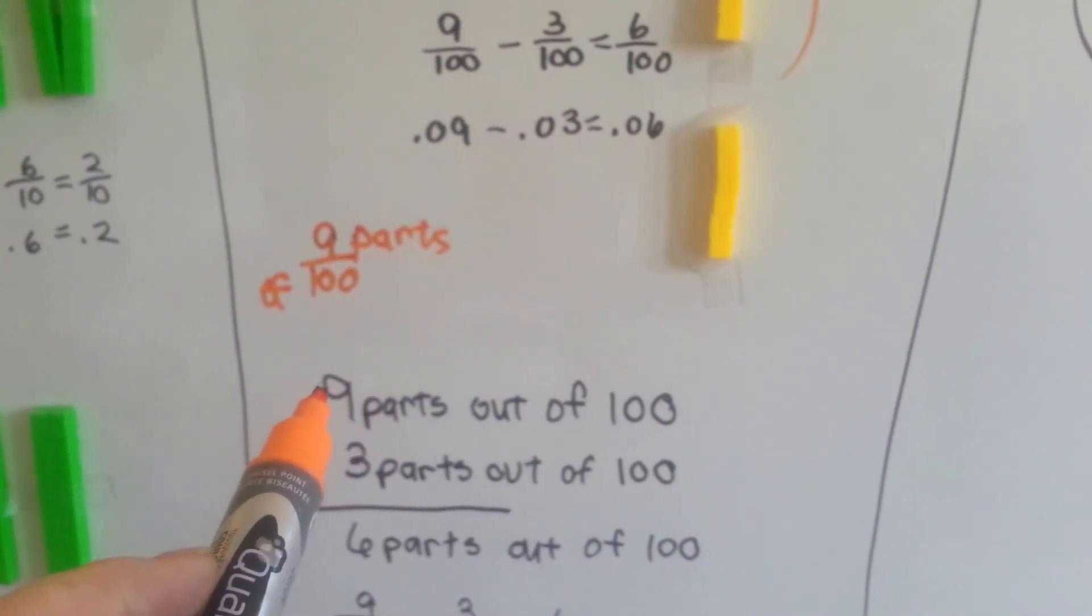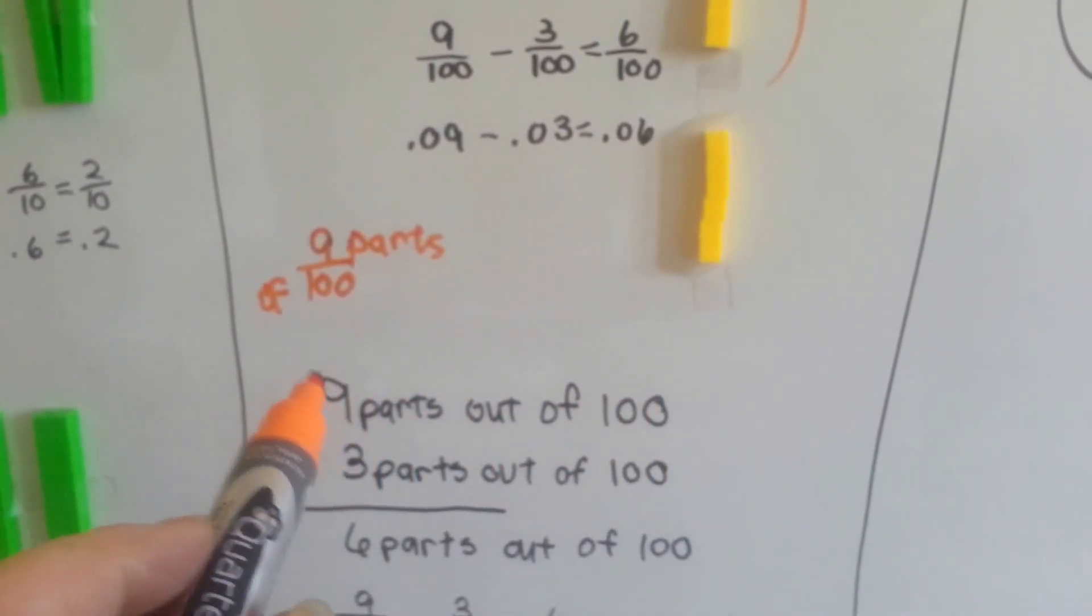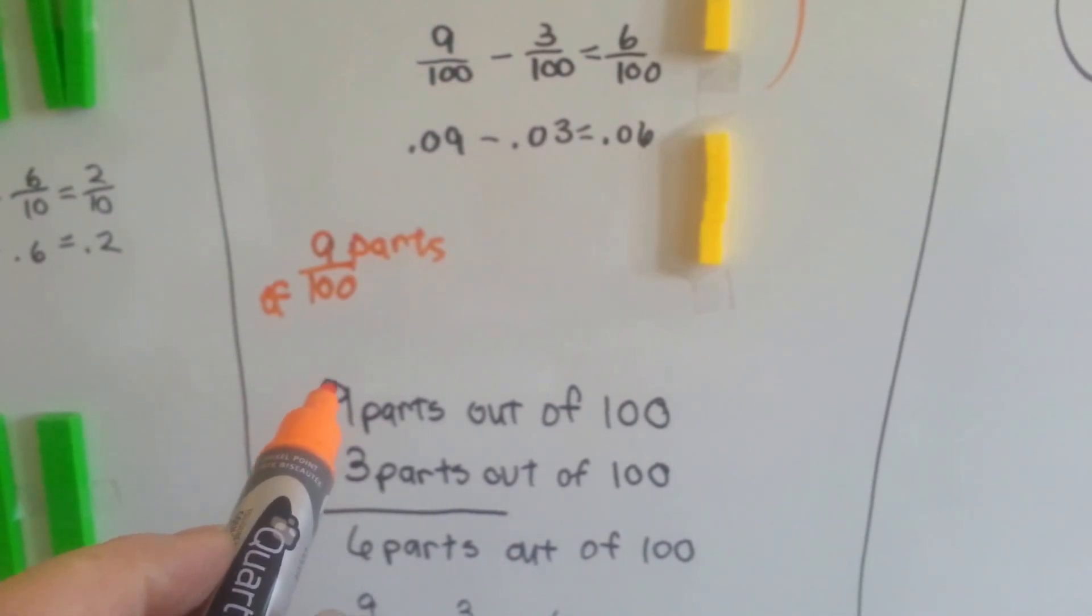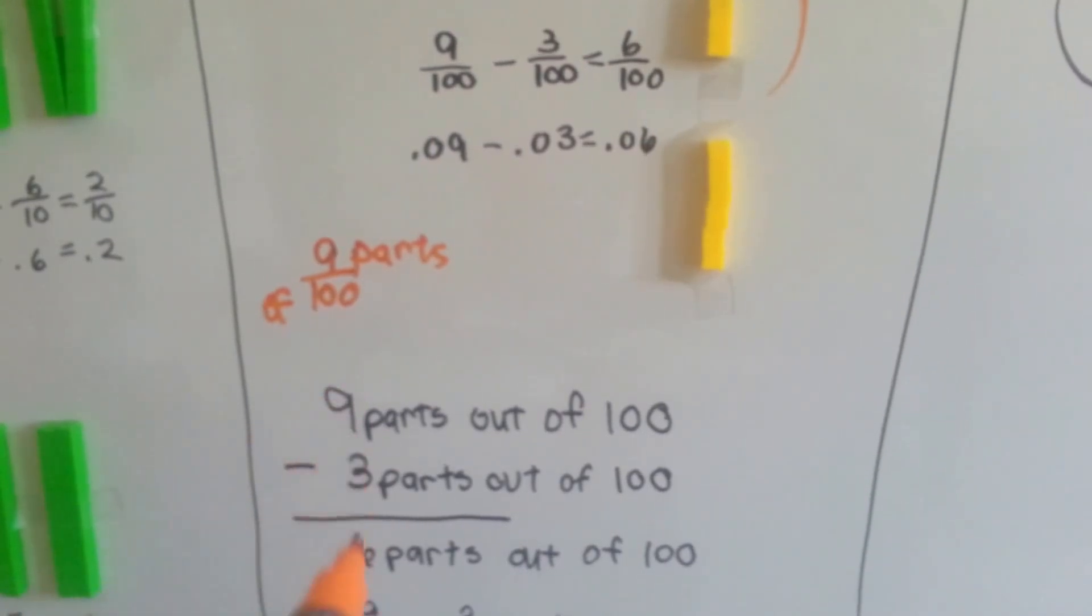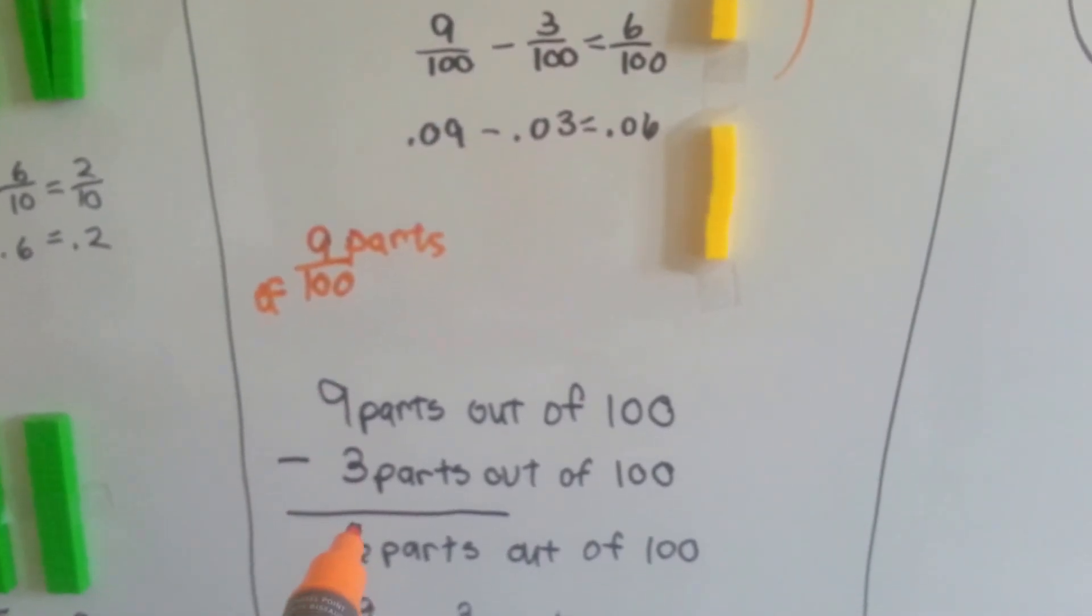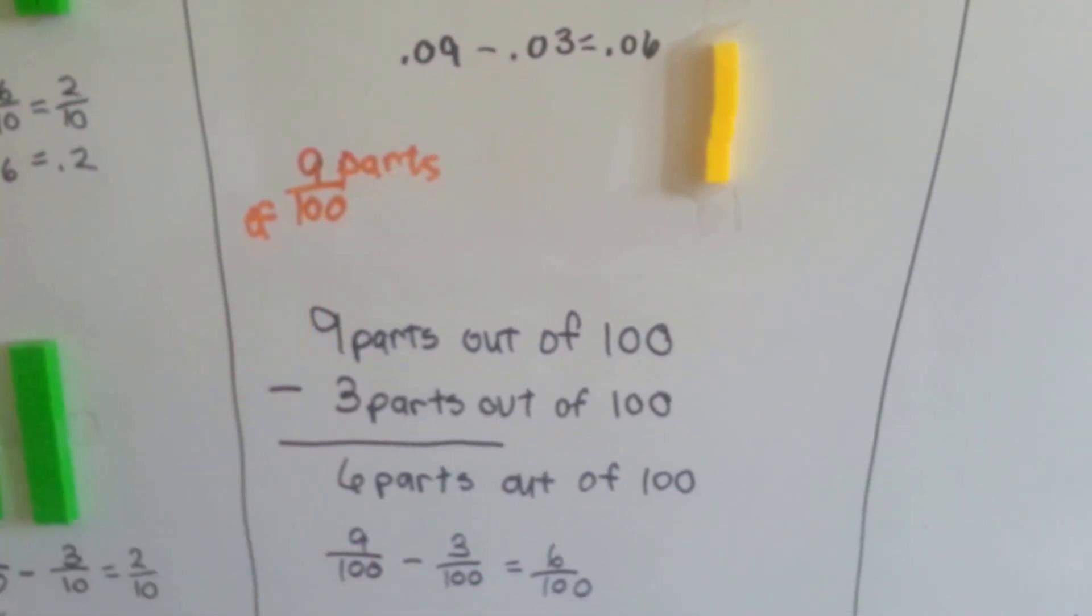If you had a pizza cut into a hundred parts, and someone gave you nine parts of it, and then your mom said, I'm really hungry, can I have three parts? Now you would be down to the six parts out of a hundred. Because you started with nine parts out of a hundred.